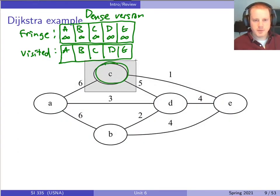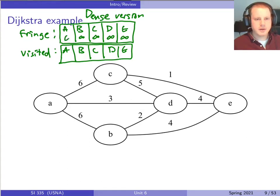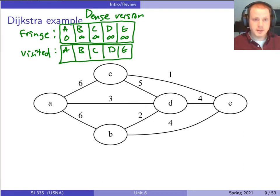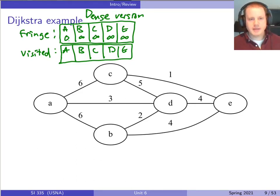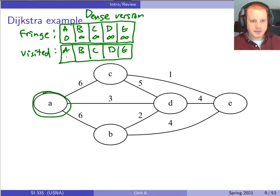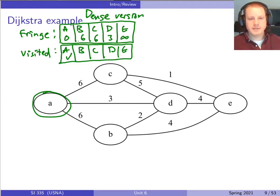Let me wipe away the previous work and see what happens with this setup. We start with our starting node having distance zero in the fringe. We find the shortest unvisited node in the fringe by taking a linear scan through everything that hasn't been visited and finding the one with the shortest length. That's going to be A, so we visit A and mark it as visited. Then we update all of the neighbors of A potentially, updating their distances in the fringe array.